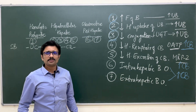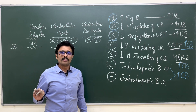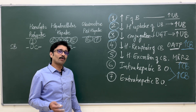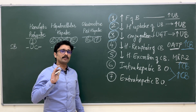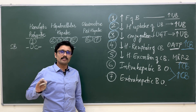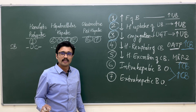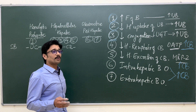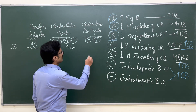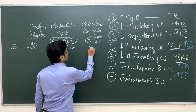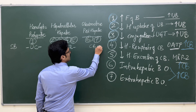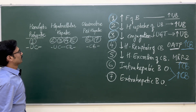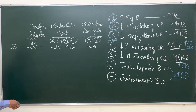In case of obstructive jaundice, it is very simple. There is obstruction to the bile flow. The conjugation has happened normally within the normal liver hepatocytes, and this conjugated bilirubin is what accumulates — it is the conjugated bilirubin levels that are increased.